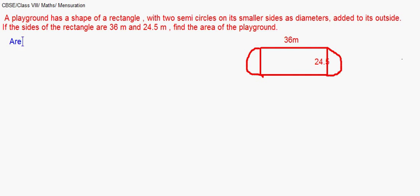Now I'll first find the area of the rectangle. Area of the rectangle will be simply length into breadth and that will be 36 into 24.5. That will be 882 square meter.